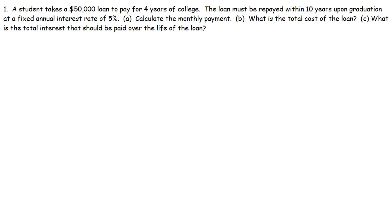In this video, we're going to talk about how to calculate the monthly payment of a student loan. We're going to do this using the amortization formula. So let's focus on this problem. A student takes a $50,000 loan to pay for four years of college. The loan must be repaid within 10 years upon graduation at a fixed annual interest rate of 5%. Calculate the monthly payment.